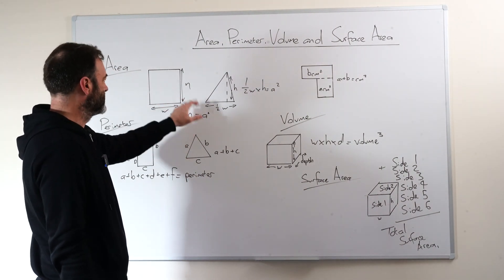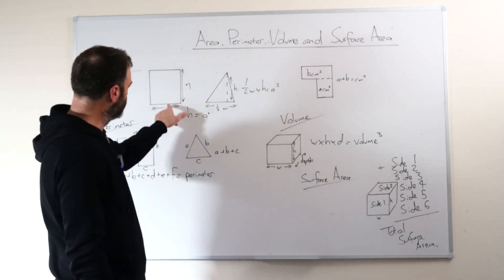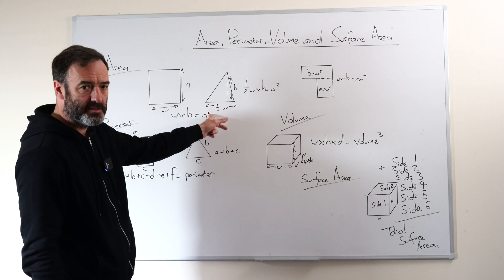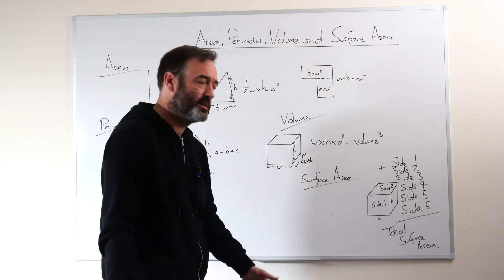But when they write their answer, say it was in centimetres, it would have to be squared. And I would say to kids, that's because you're multiplying two things. So you've got a pair of two squared. It could be metres squared, centimetres squared, and so on.